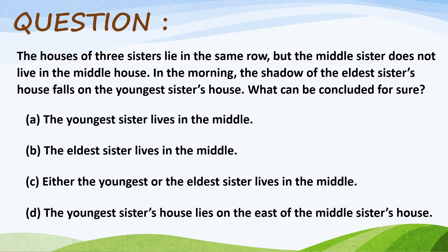Question. The houses of three sisters lie in the same row, but the middle sister does not live in the middle house. In the morning, the shadow of the eldest sister's house falls on the youngest sister's house. What can be concluded for sure?